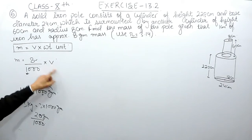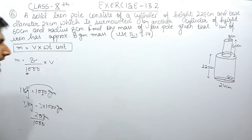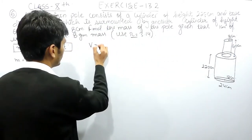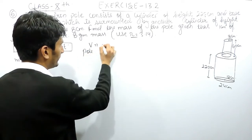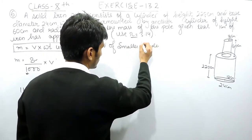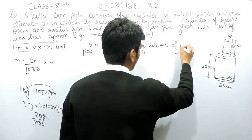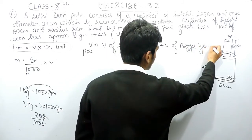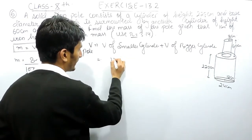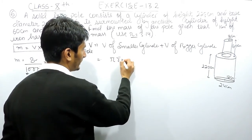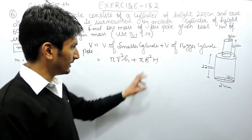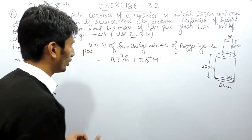Now the important part is you need to find the volume of this iron pole. The volume of the complete pole will be the volume of the smaller cylinder plus the volume of the bigger cylinder. Volume of smaller cylinder is pi r squared h, and volume of the bigger cylinder is pi R squared H. Capital R and H are used for the bigger cylinder, and small r and h for the smaller one.